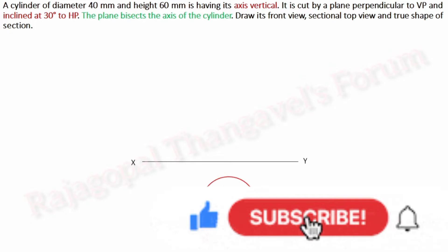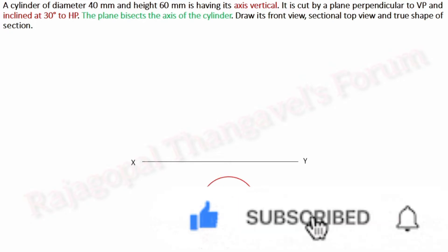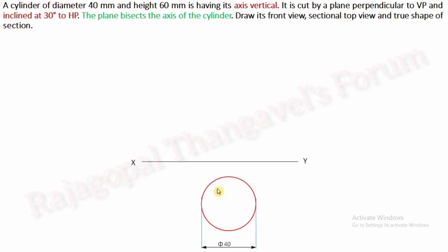As the top view is a circle and diameter of the circle is 40 mm, you can divide the circle into 8 divisions. You can even go for 12 divisions for a better, more accurate answer in the true shape of section. So I am preferring 8 divisions.